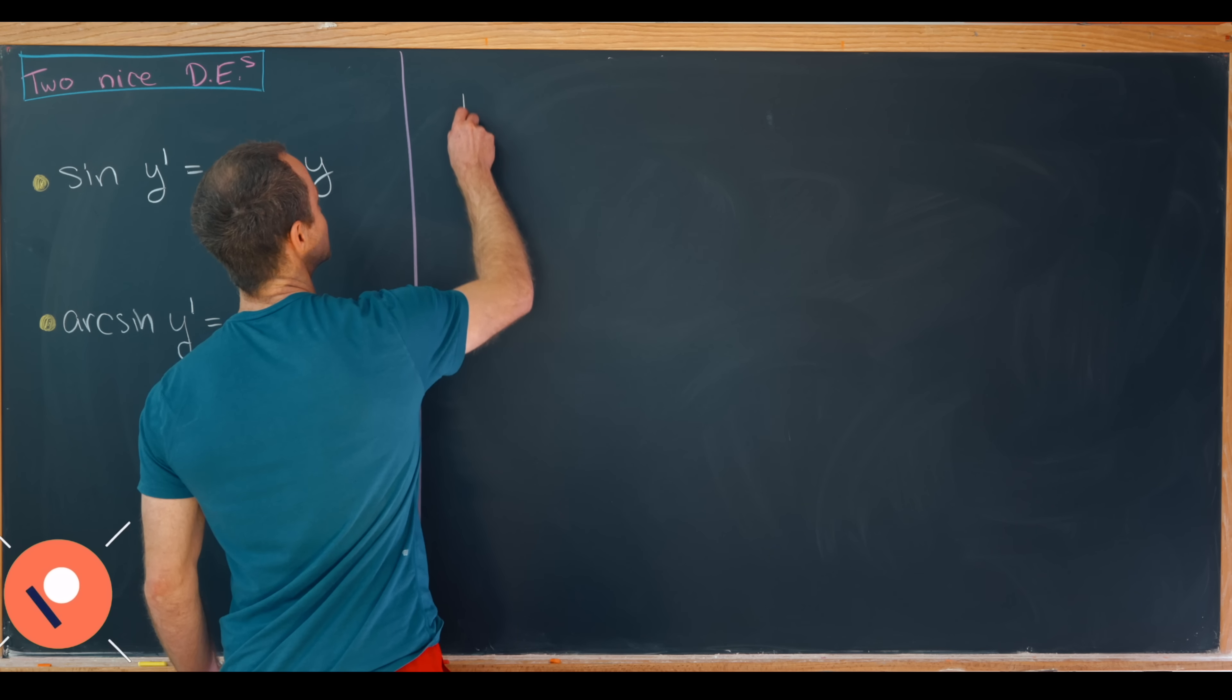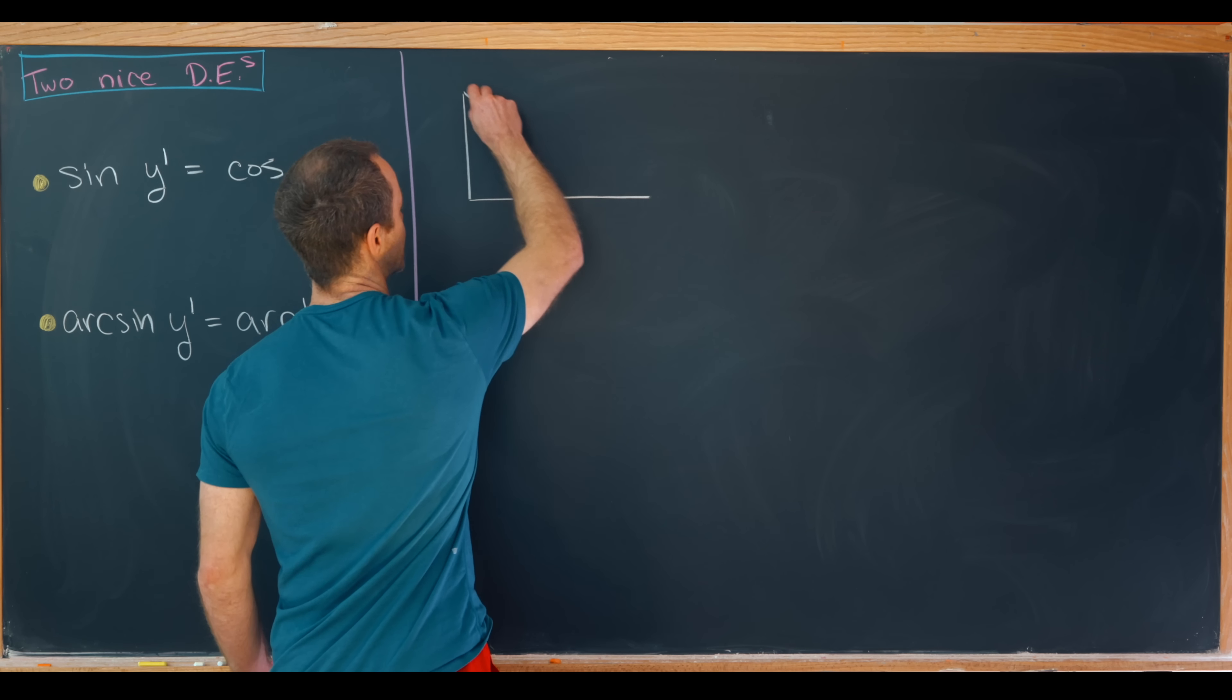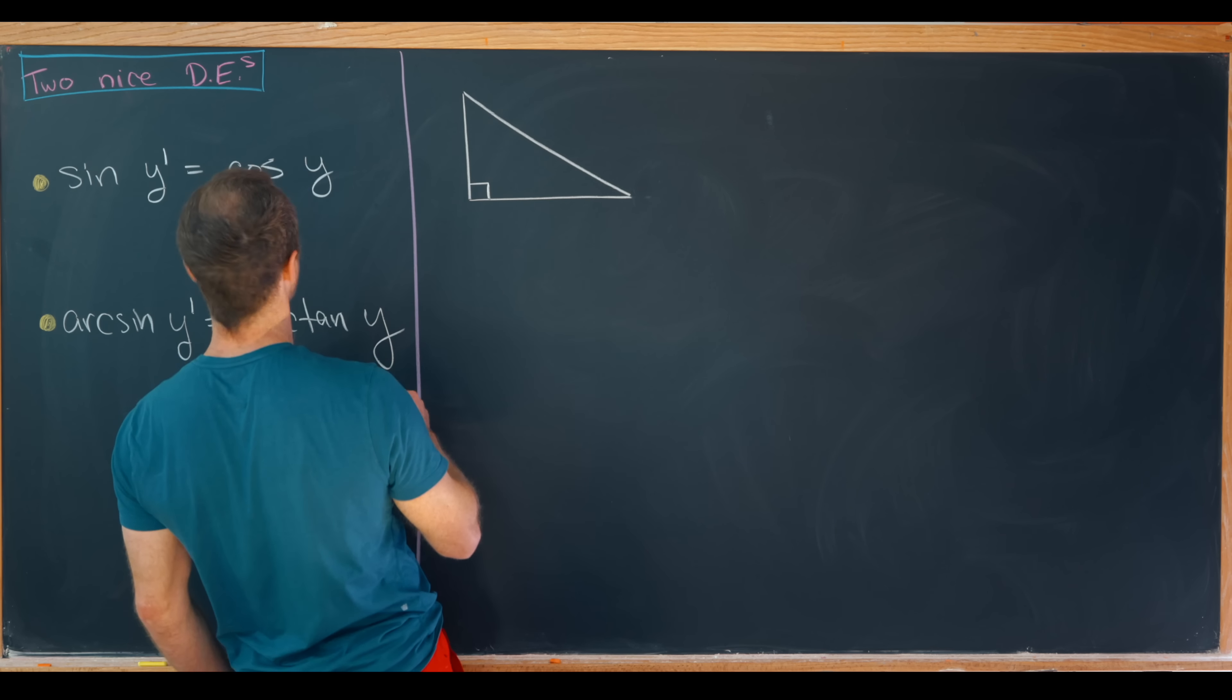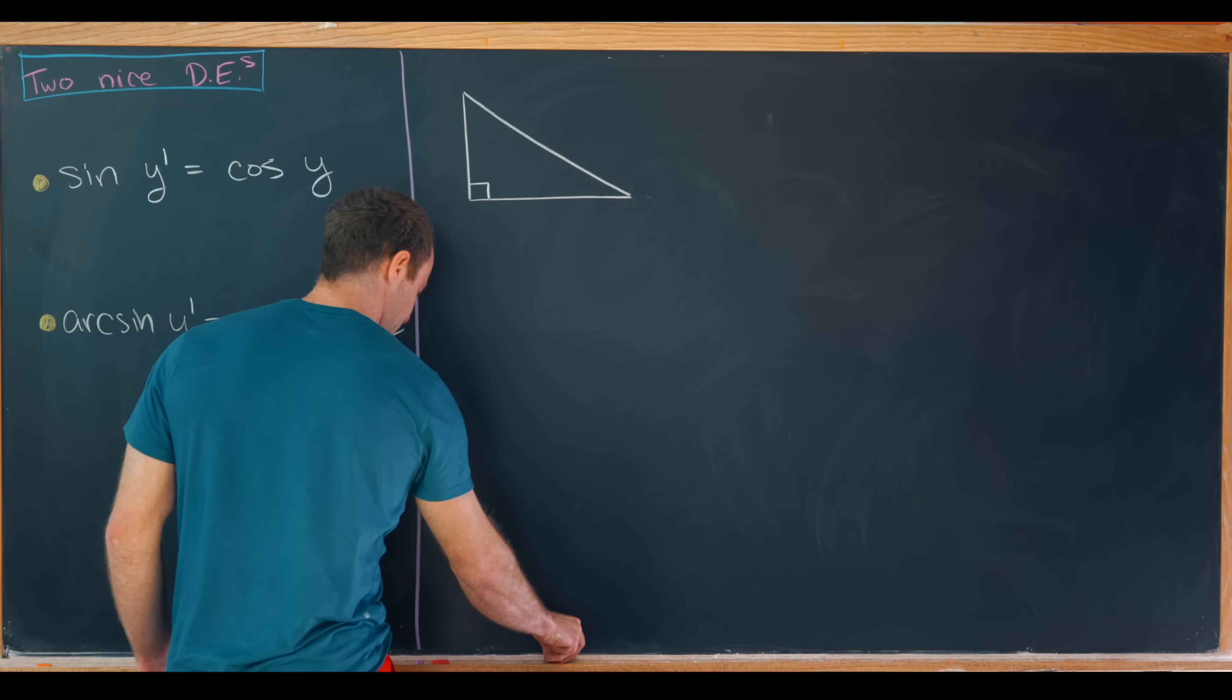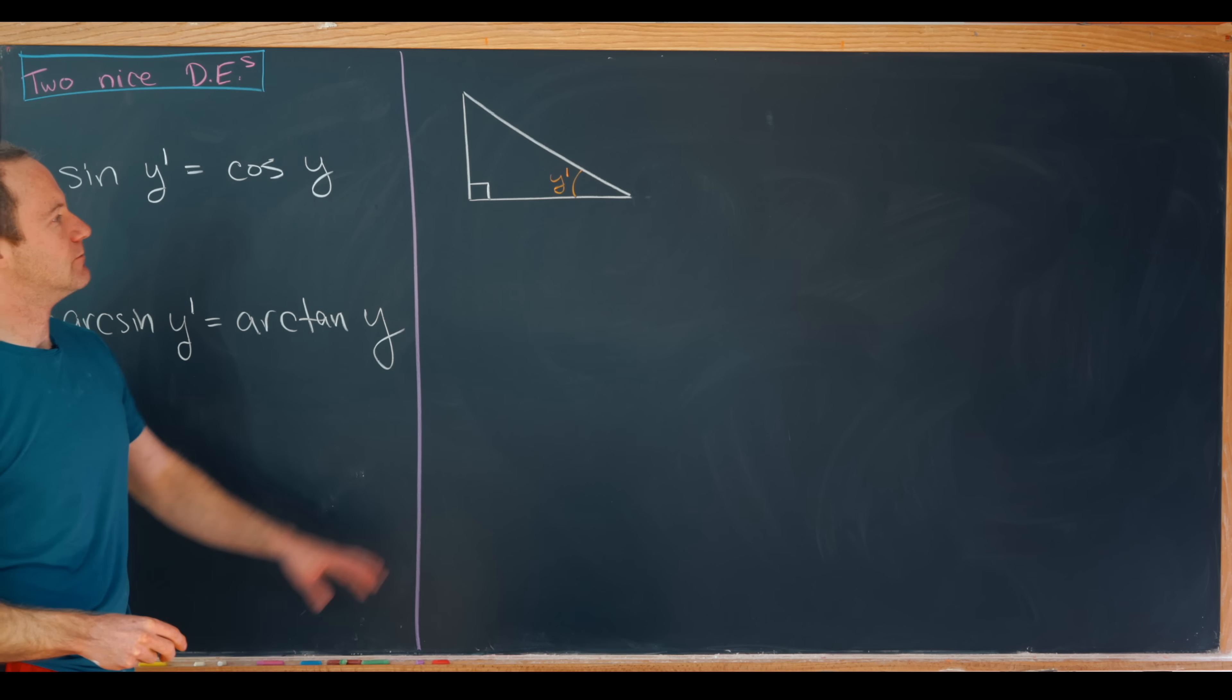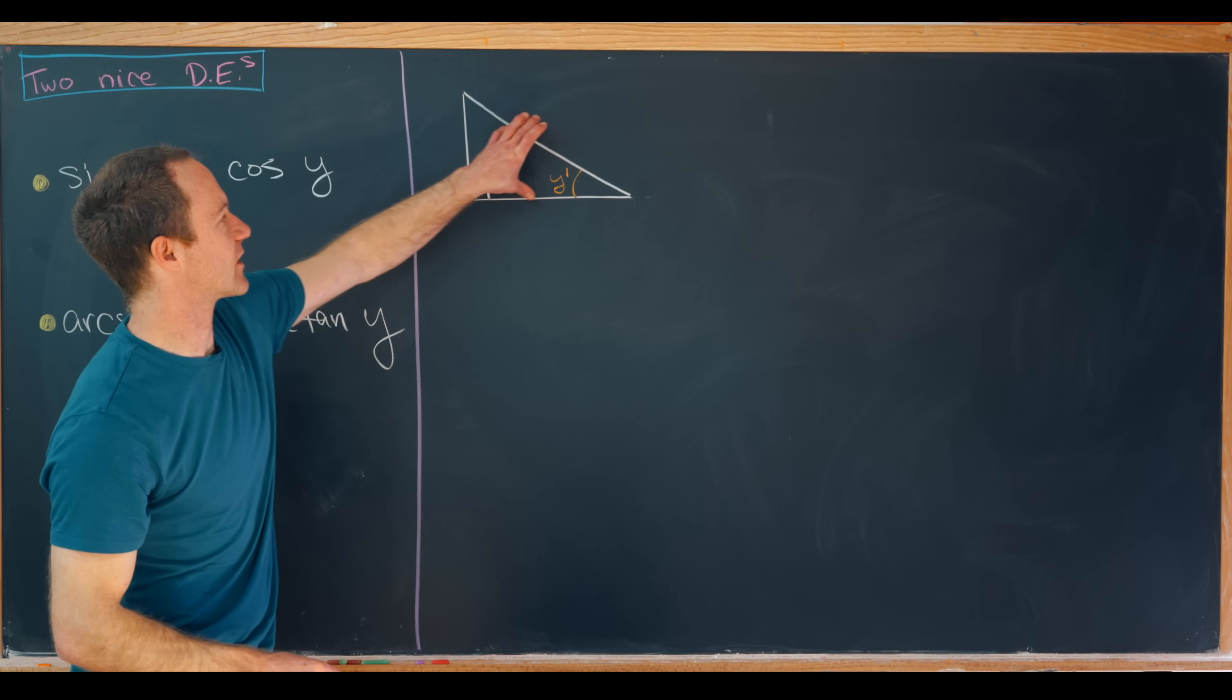What I'd like to do is complete a triangle out of this situation. Let's say we have something like this with our right angle and maybe we have sine of y prime. This is a little bit strange maybe, but we're going to set this angle equal to y prime.